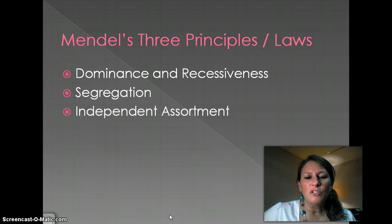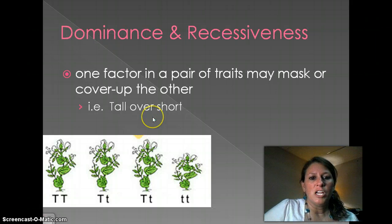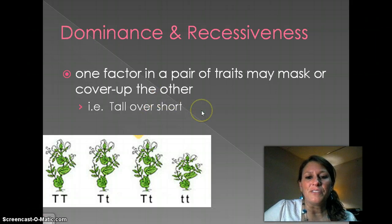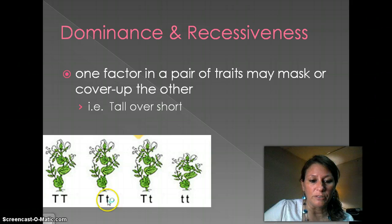Based on his observations from the garden pea plant, Mendel came up with three principles — sometimes called three laws. First is dominance and recessiveness. Dominance and recessiveness is when one trait masks or covers up another trait. Even though I have two tall plants, the tall trait is covering up or masking the short trait — that short allele. So I still have three tall plants and one short, even though two of the three tall plants are carrying the recessive trait.